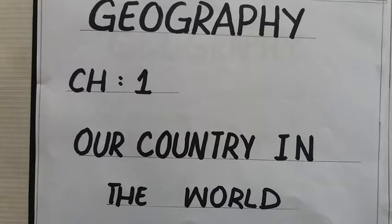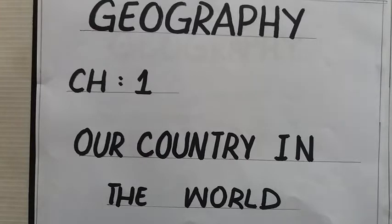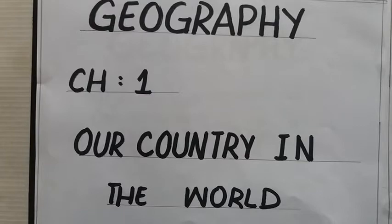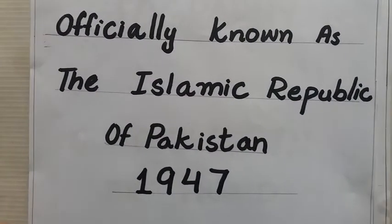Do you know that when Pakistan came into being? Pakistan came into being in 1947 on 14th of August. What is the official name of Pakistan? The official name of Pakistan is the Islamic Republic of Pakistan.